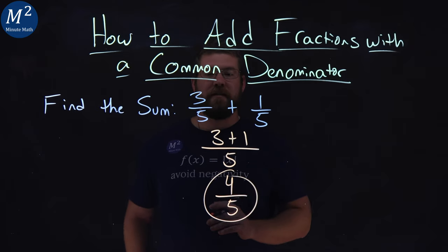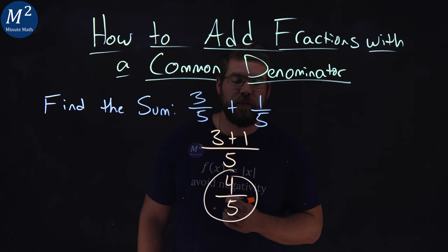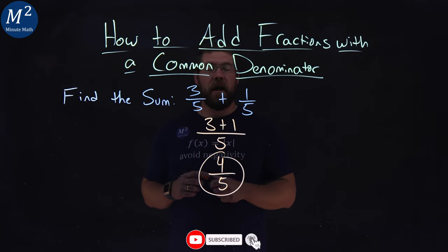Four-fifths is the result of three-fifths plus one-fifth. I hope you learned something here, how to add fractions with a common denominator.